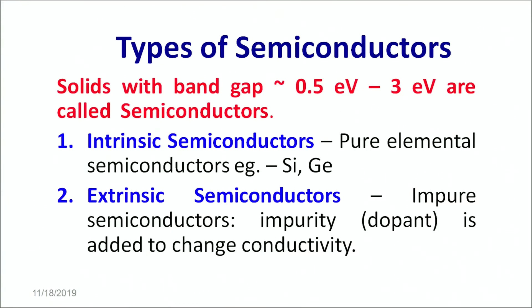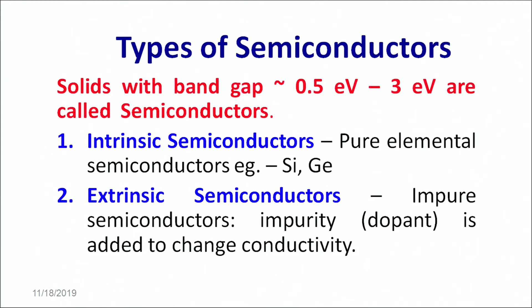As discussed in the previous part, semiconductors are those materials whose energy band gap is of the order of 0.5 electron volts to 3 electron volts. These materials have conductivity lying within the conductivity of the conductors and the insulators, and it is this particular property which makes them really special. On the basis of their kind, they are classified as intrinsic semiconductors and extrinsic semiconductors.